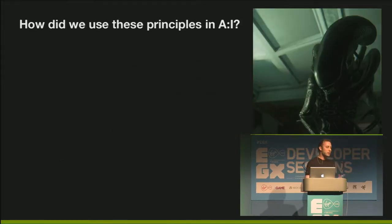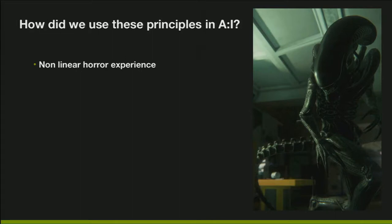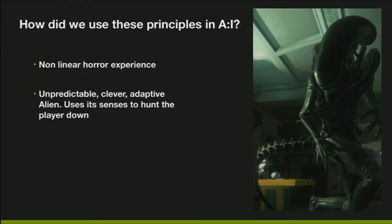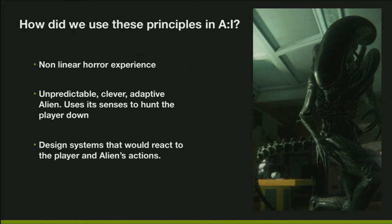How do we use these principles in Alien Isolation? It's important to understand that although the story part is quite a linear experience, the core values of it are quite non-linear. That whole gameplay moment of you and the alien is very non-linear. We have this unpredictable, clever, adaptive alien that uses its senses to hunt you down - it can hear you, it can see you in plain sight, and it can see the light coming from your torch. That's quite a problem for the sound team because we need to be able to preempt what's happening, build tension and suspense. So it became an exercise in creating systems that could do that - systems that could react to what the alien is doing and what the player is doing.